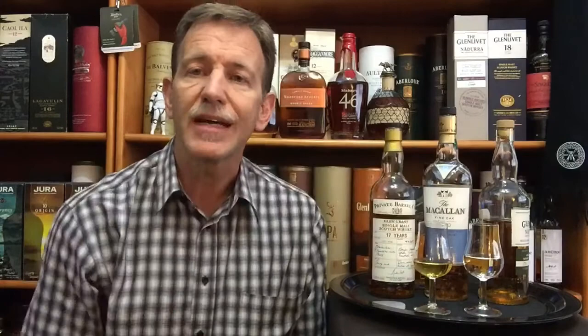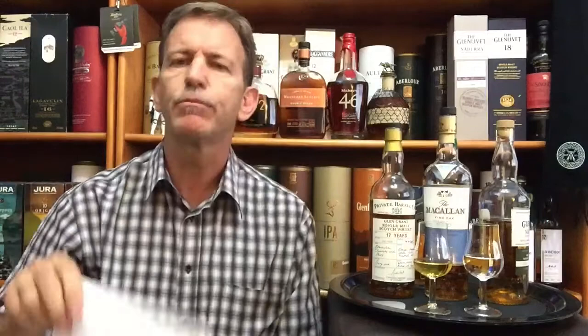When talking about single malts, you can have non-peated or peated single malts. Non-peated means that the malted barley was dried with hot air, and peated means that it was dried with peat smoke — which gives the barley a smoky flavor and aroma that will affect the end product. This is what peat looks like: it is compressed plant material that is dug out, then dried and used as fuel to make fire.